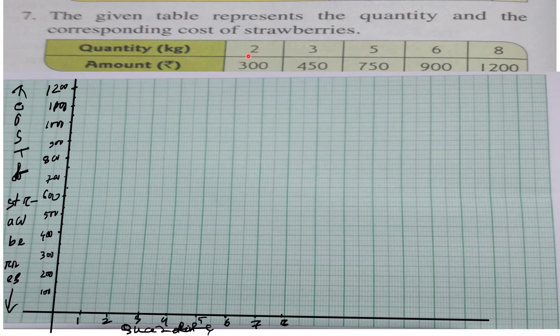So, 2 kg of strawberries costs rupees 300, 3 kg costs 450, 5 kg costs 750, 6 kg costs 900, and 8 kg costs 1200.